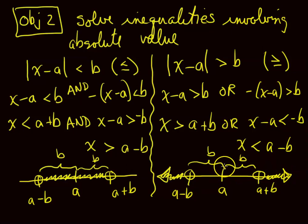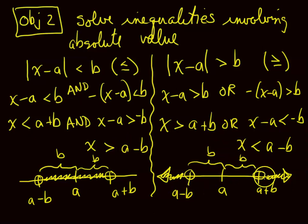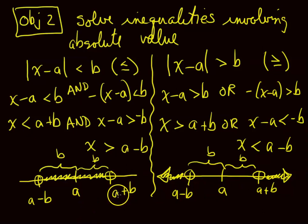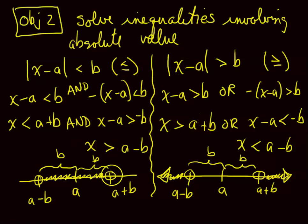If you were given a situation where this used AND instead, you'd have to be careful, because then it would be the empty set — nothing would work. Note also that if it's less than or equal to or greater than or equal to, things are exactly the same, except now the endpoints are included — shown with colored-in circles or the square brackets that the book uses.